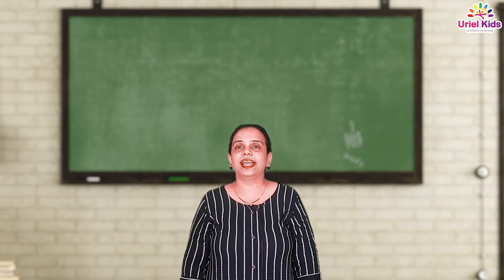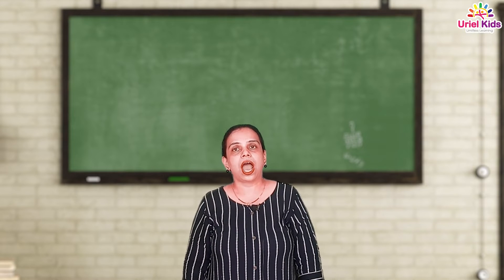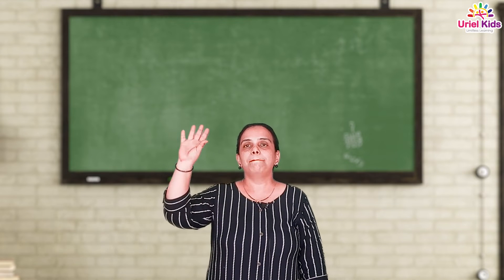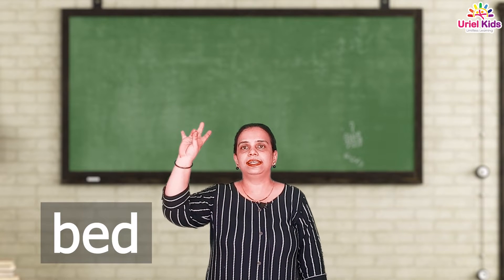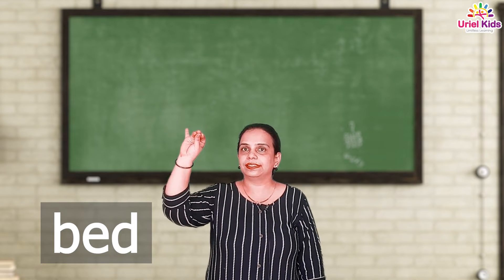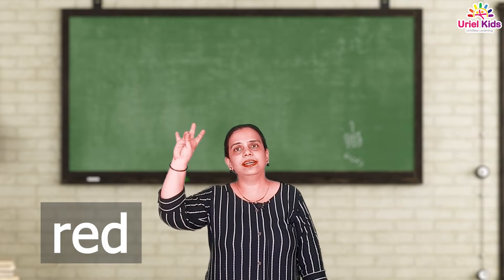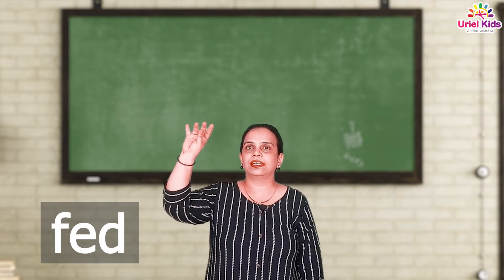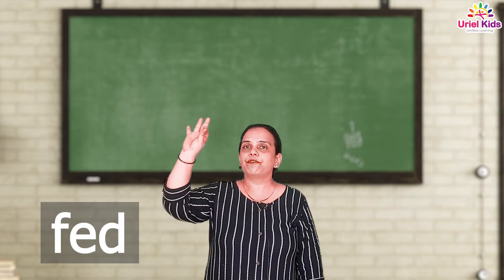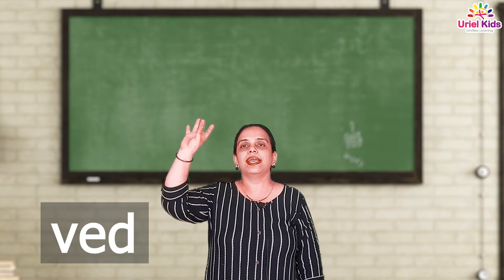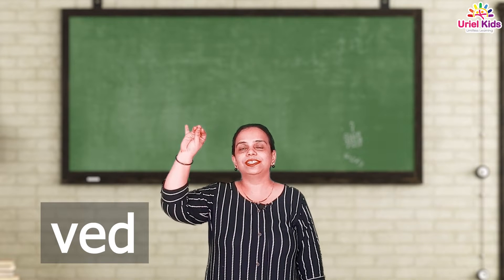So we are going to do E-D end letter words. Let's use the tapping method. B, E, D — Bed. R, E, D — Red. Good job.